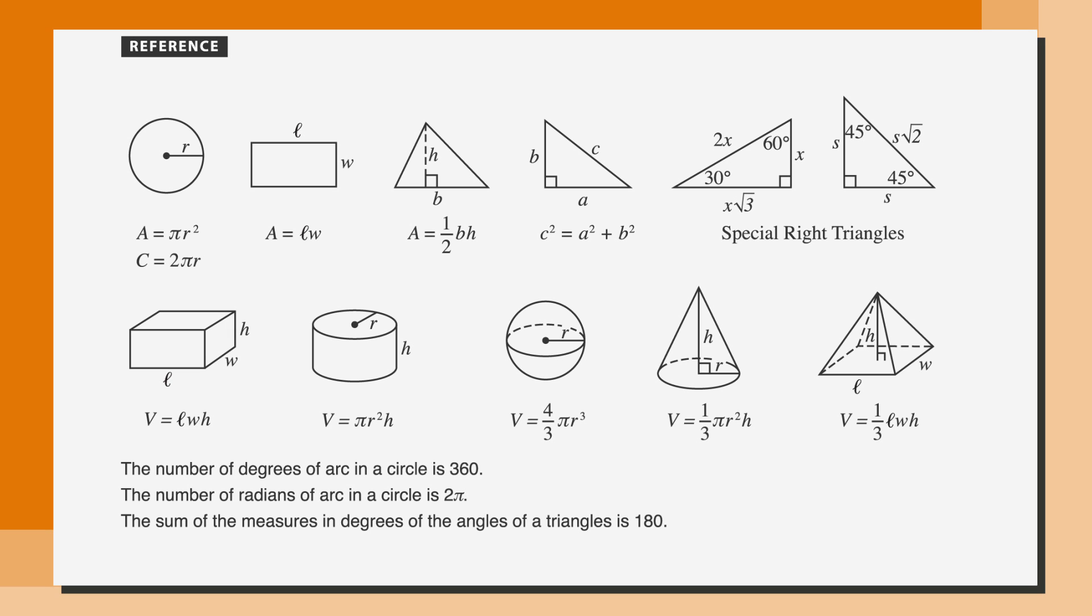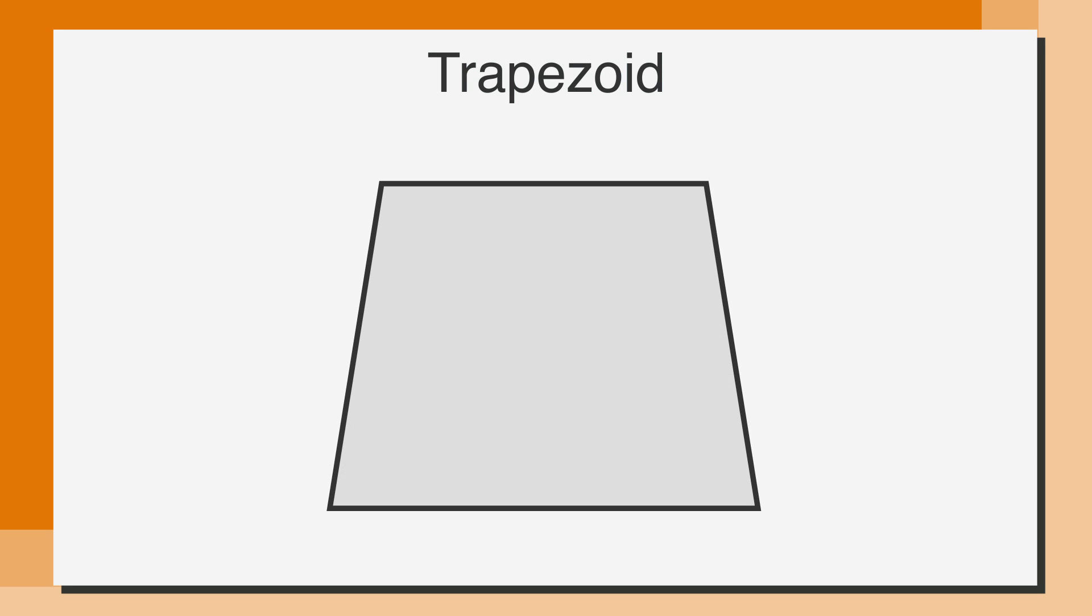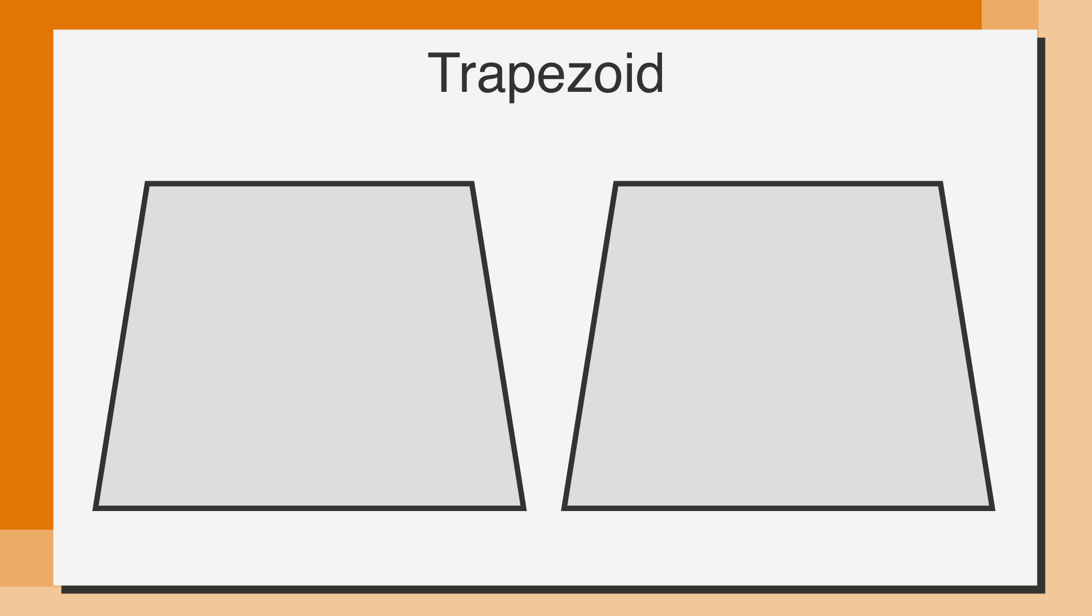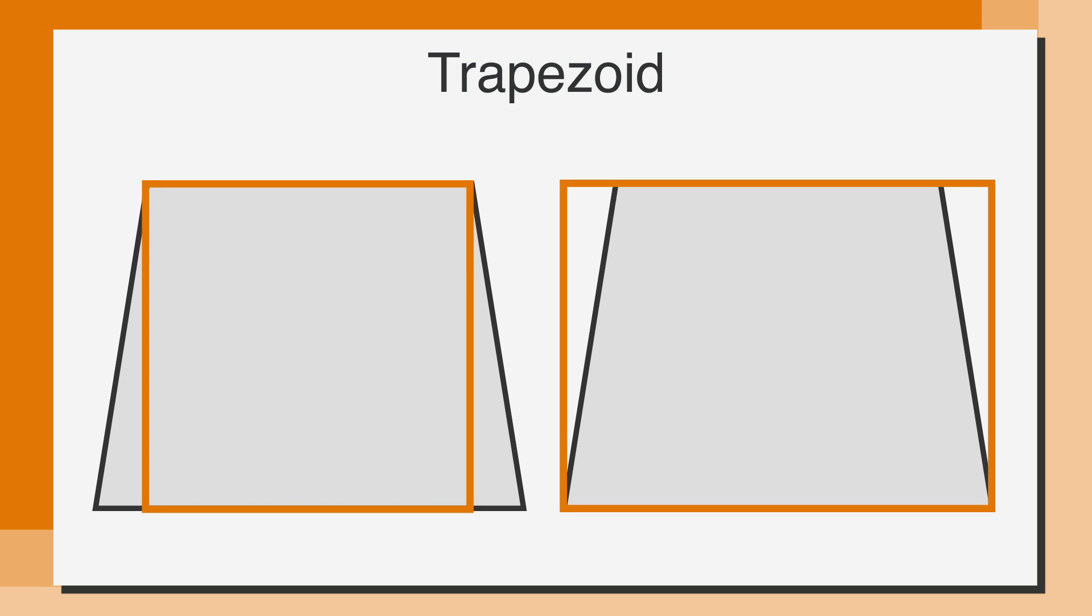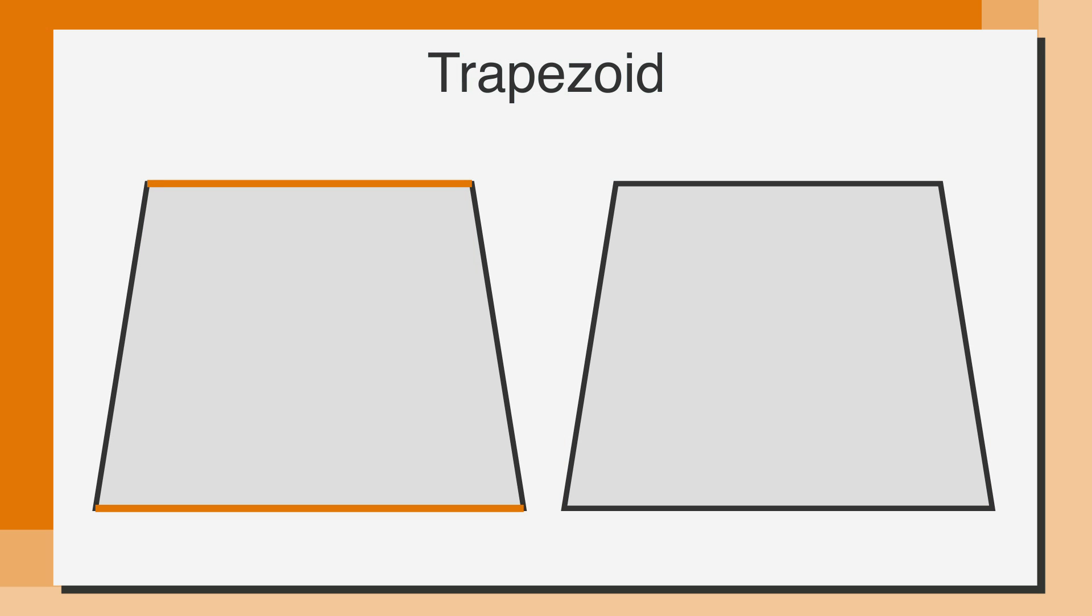There is an oddball in the quadrilateral family, the trapezoid. A trapezoid is a four-sided shape, just like a square or a rectangle, but it only has two parallel sides, and they are different lengths.